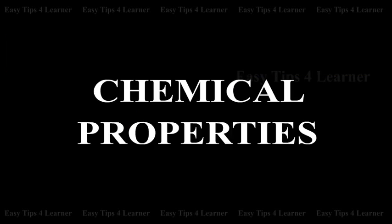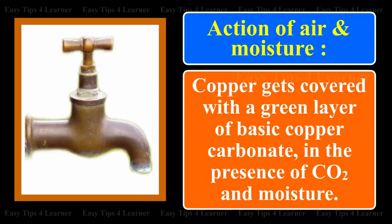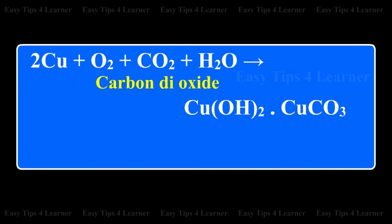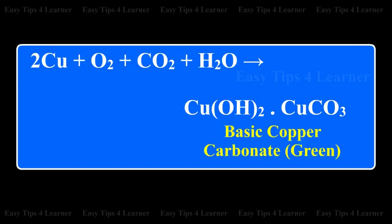Chemical properties. Action of air and moisture: Copper gets covered with a green layer of basic copper carbonate in the presence of carbon dioxide and moisture. Copper + oxygen + carbon dioxide + water gives basic copper carbonate, which is green.